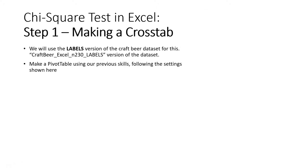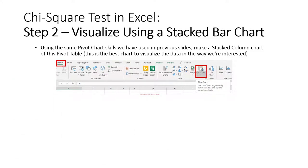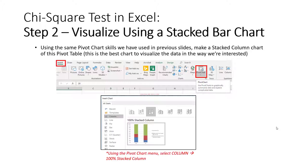In step 1, we're going to use the labels version of the craft beer data set to make a pivot table using our previously developed skills, with the settings shown here. Once we create that table, we'll move on to step 2 and create a stacked bar chart using a pivot chart — another skill we've developed previously — using the 100% stacked column setting. Let's hop over to Excel now and complete these tasks.